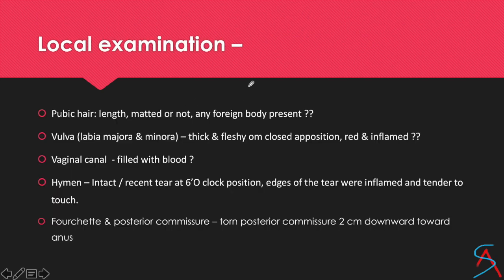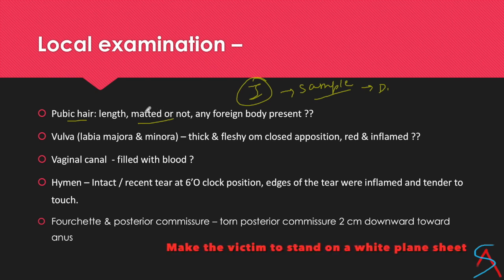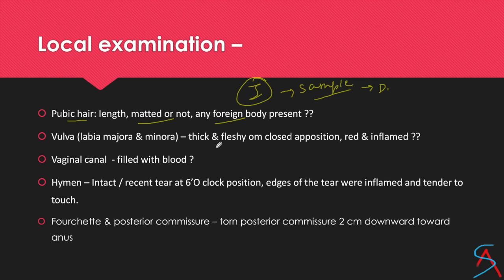For local examination, start with inspection and then collect samples. On inspection, look at the pubic hair — check whether there is any loose pubic hair and whether they are matted. If matted, take a sample by cutting the pubic hair. Comb the pubic hair to find any loose hair or foreign body. Look at the vulva for any signs of inflammation. Look at the vaginal canal for any blood or semen — if semen is present, take the sample.